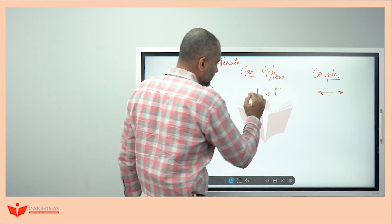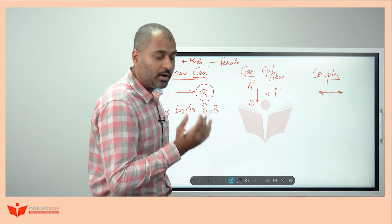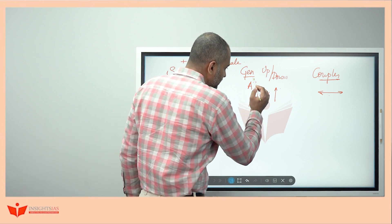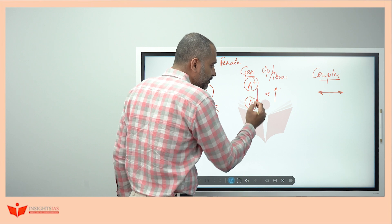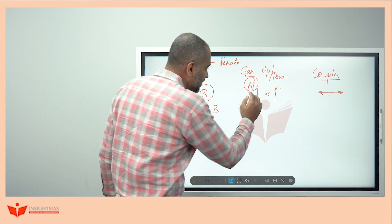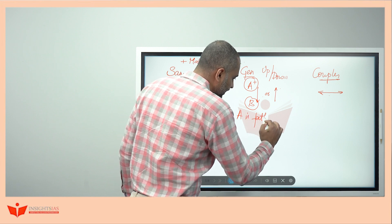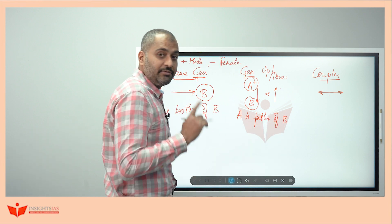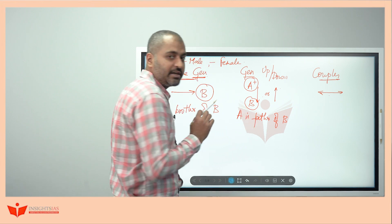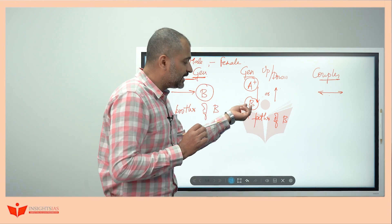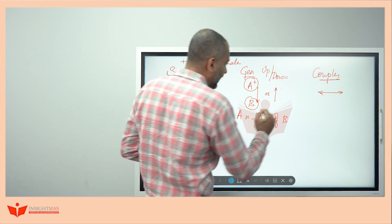If I write a vertical arrow, this represents one generation up or down. This generation up means parent, this generation down means child. So A is parent and B is the child — A is father of B. If A is father of B, how is B related to A? We don't know the gender of B, so we can say either son or daughter.